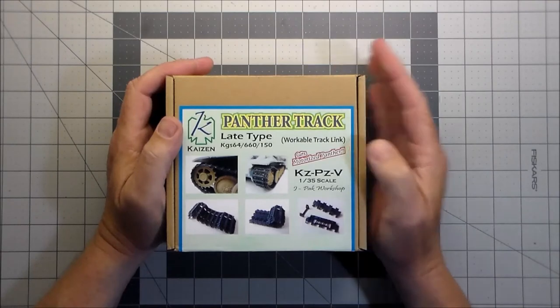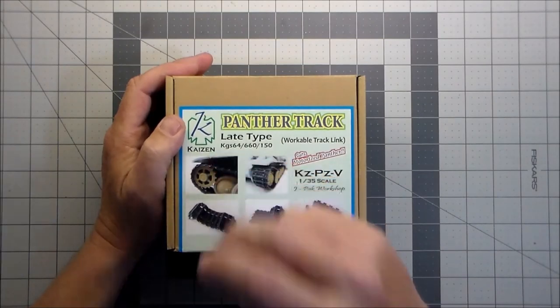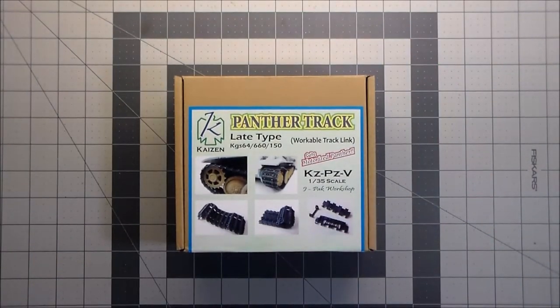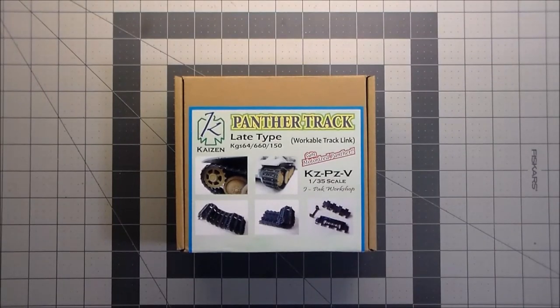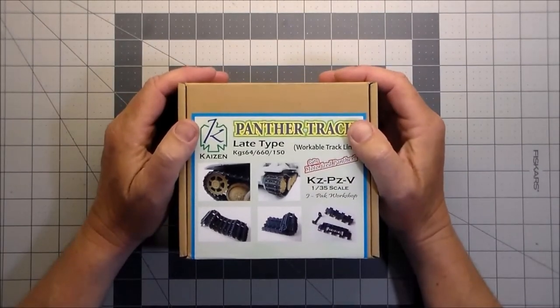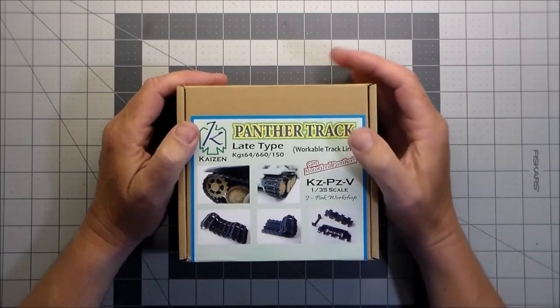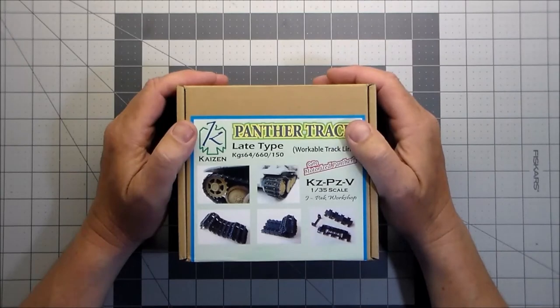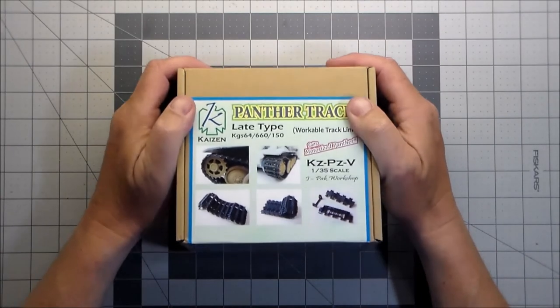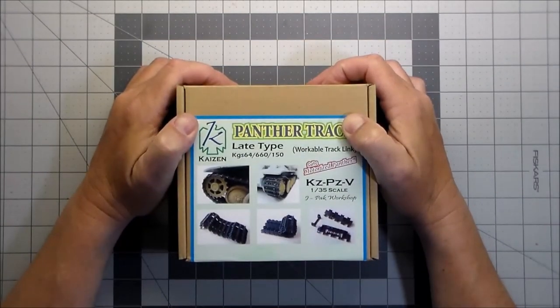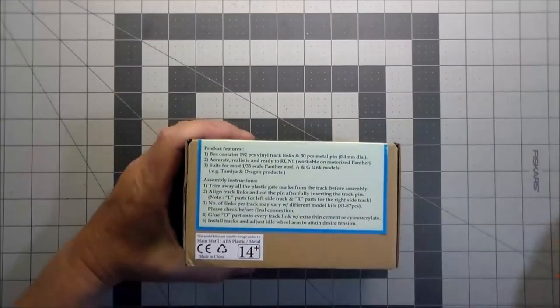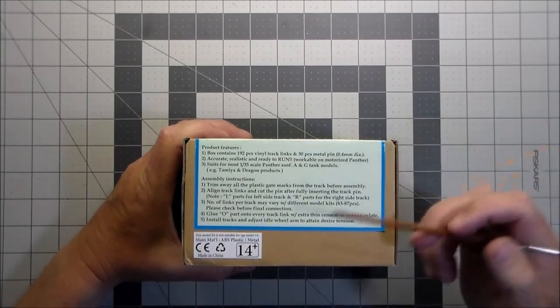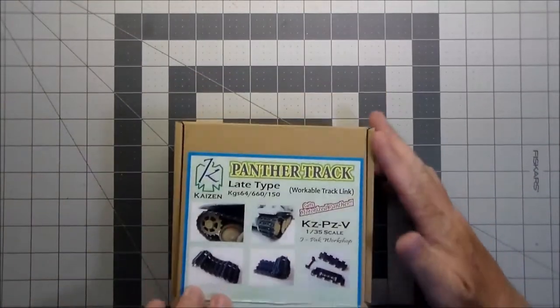I cracked and bought some individual link tracks, workable track links. These are Panther tracks by Kaizen. A big reason I got these is I wanted to go with some individual link tracks and I didn't really want to spend a whole lot of money on them, especially for my first set. One of the YouTube channels I follow, Adam Mann, he did a Tiger track by Kaizen, he did a review on them and they looked really good, so I thought I'm going to give these things a shot.